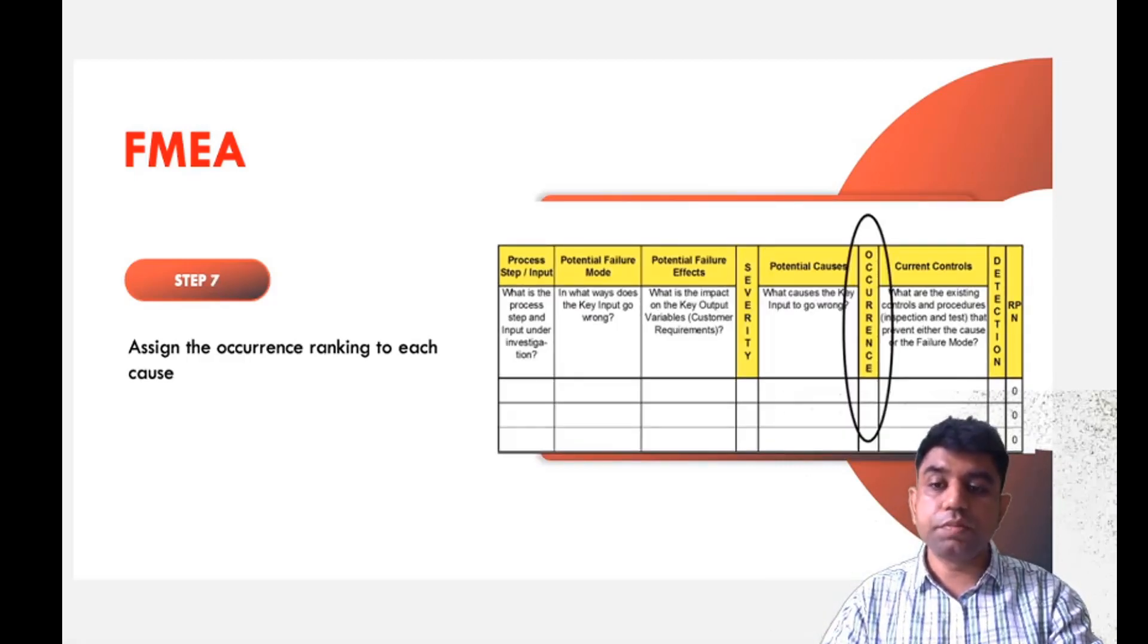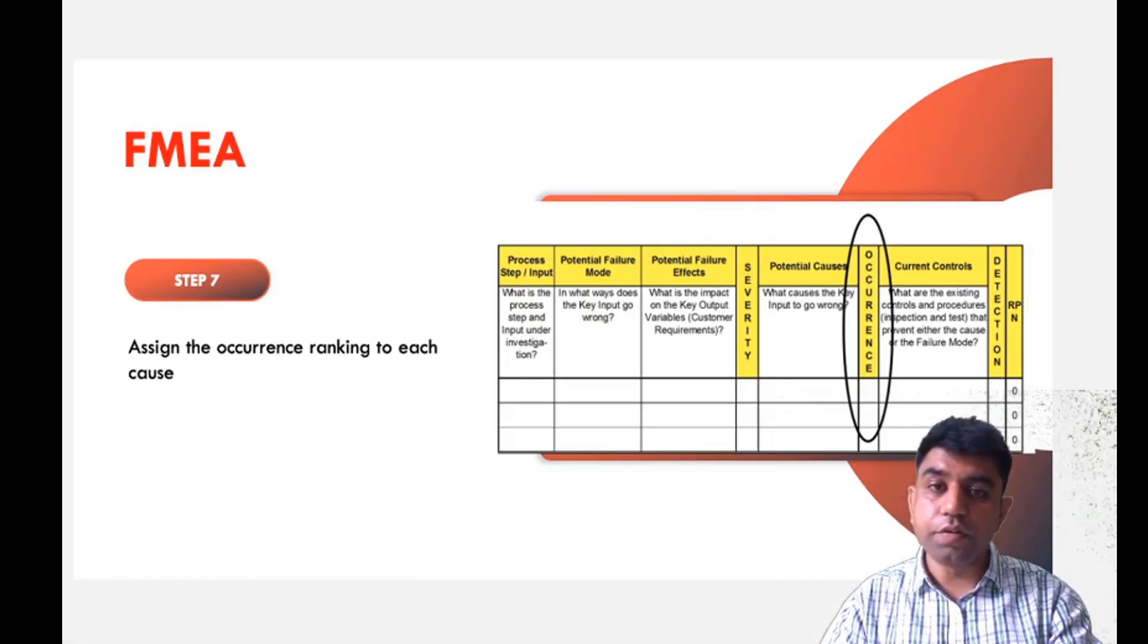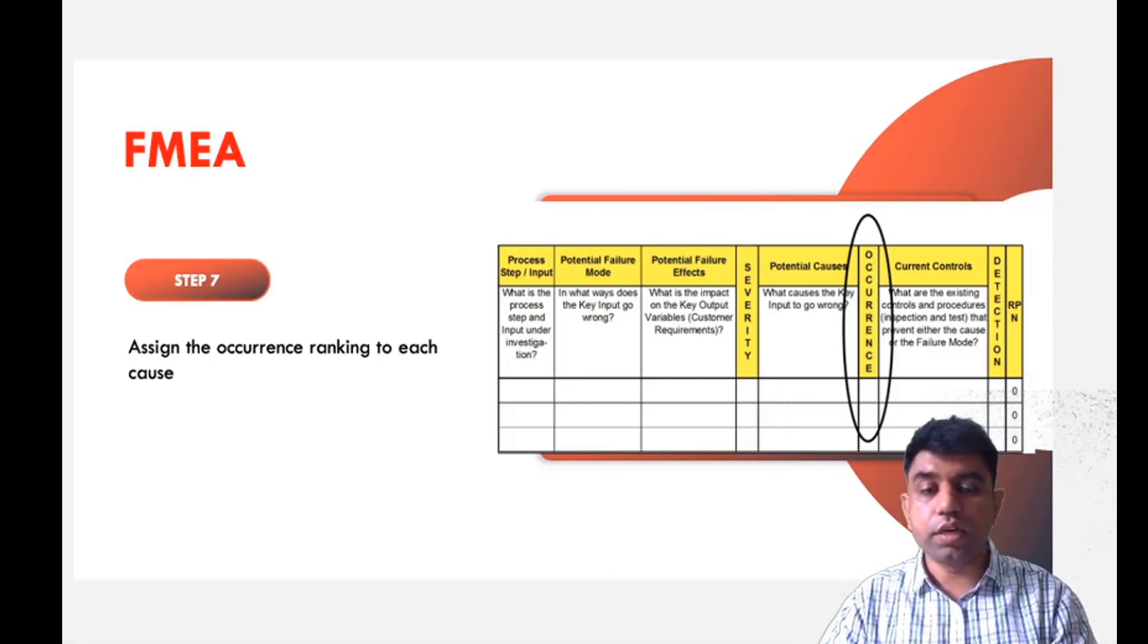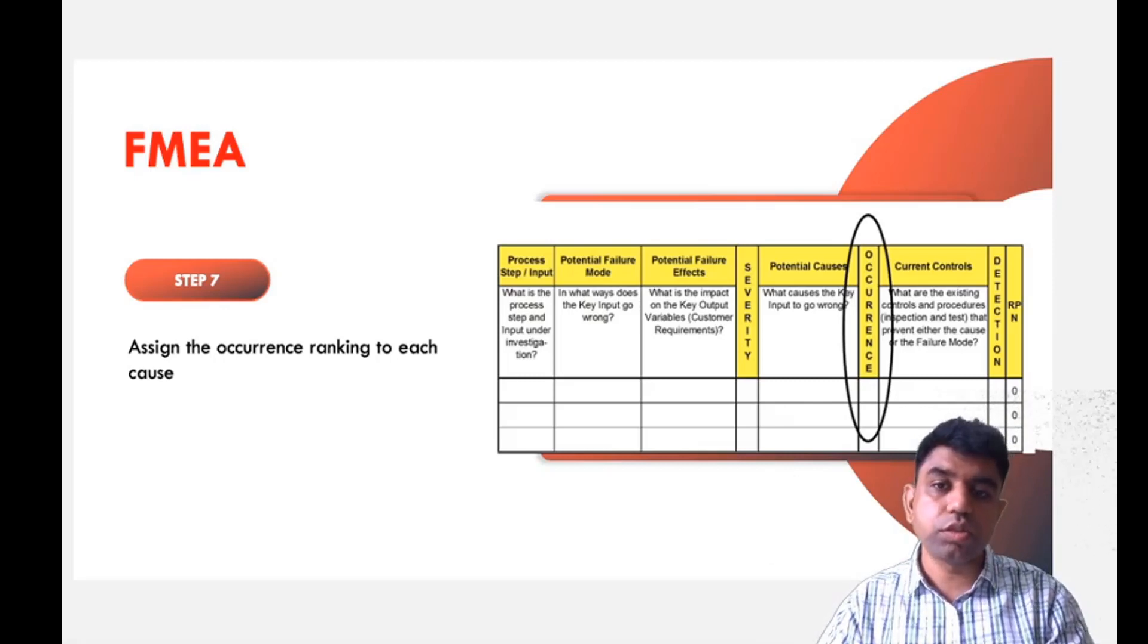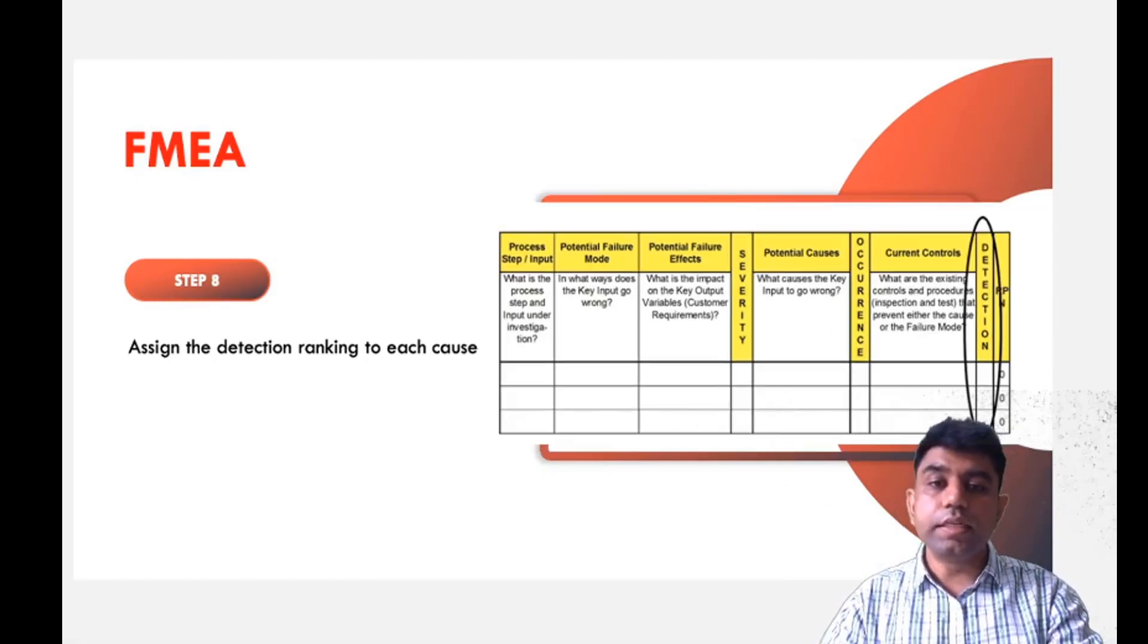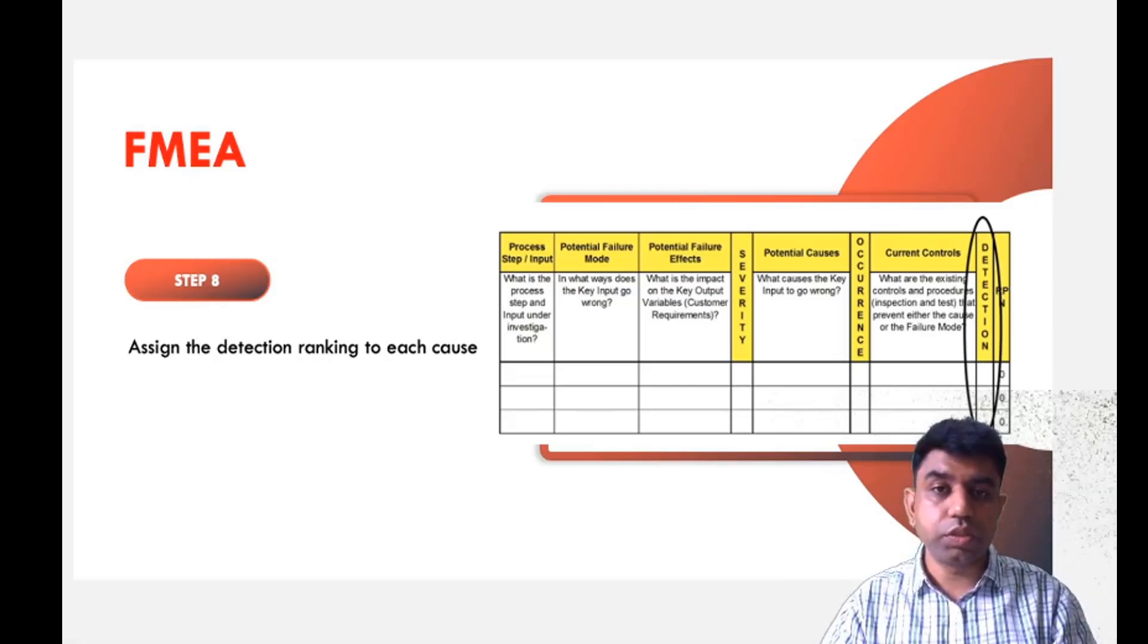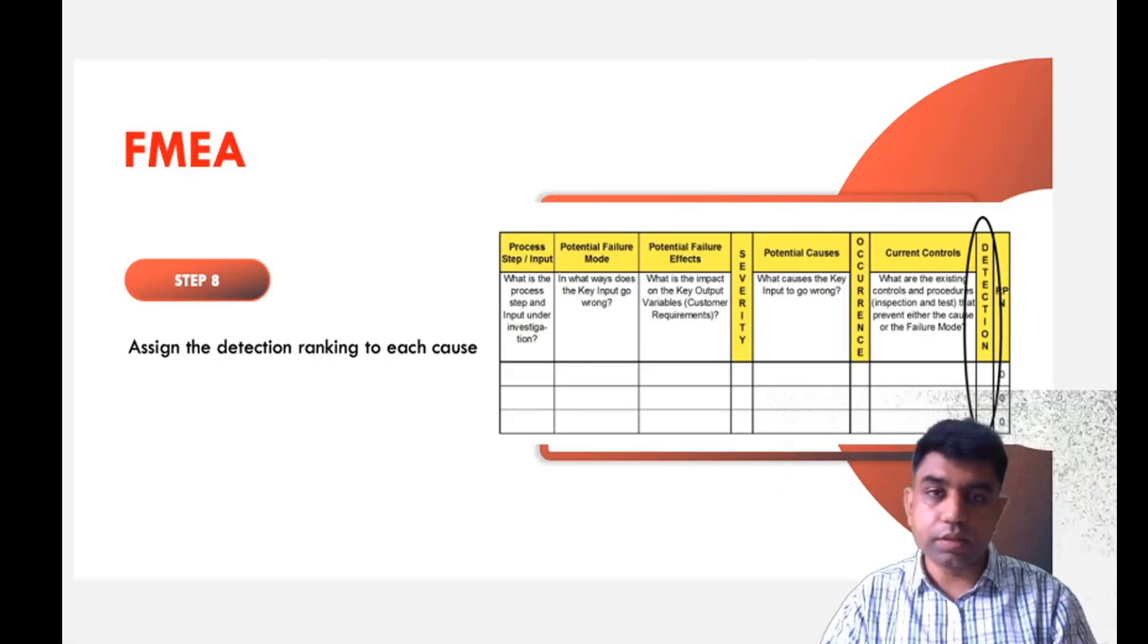The seventh step is to assign occurrence ranking to each cause. We give a ranking for how frequently the defect is happening. If we analyze a hundred components and the defect happens in ten, the occurrence rate is very high. If it happens in only one or two components, the occurrence rate is low. In the eighth step, we assign detection ranking to each cause, which measures how easily we can detect the error.